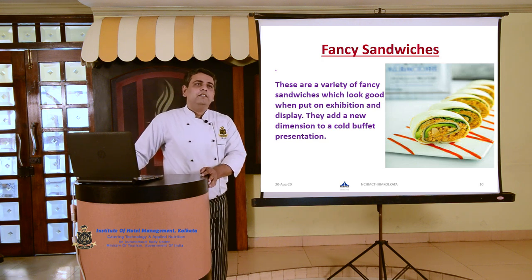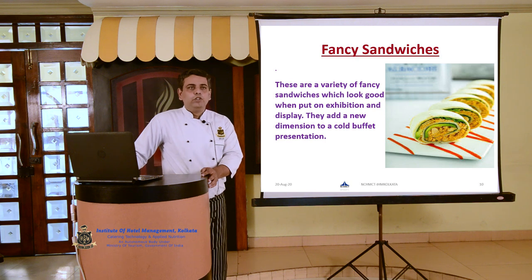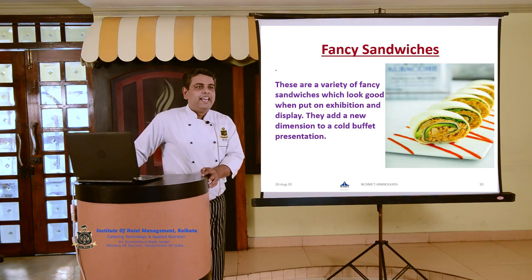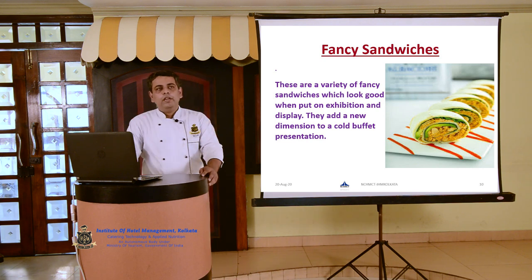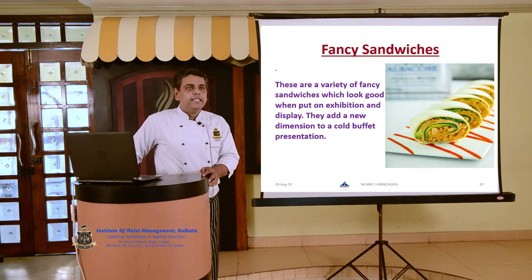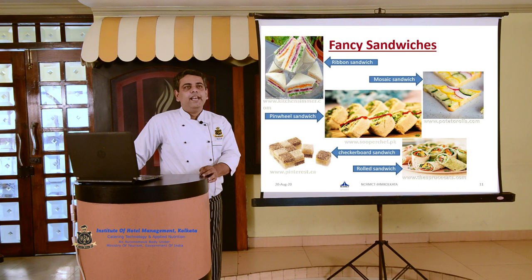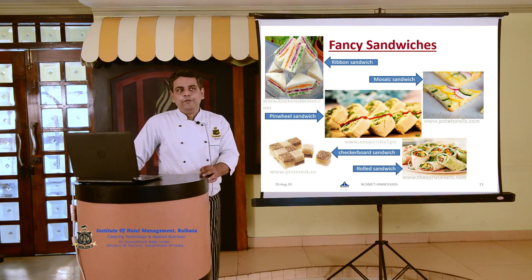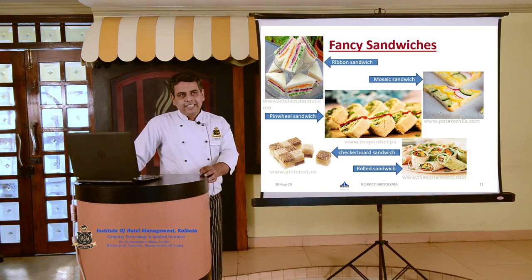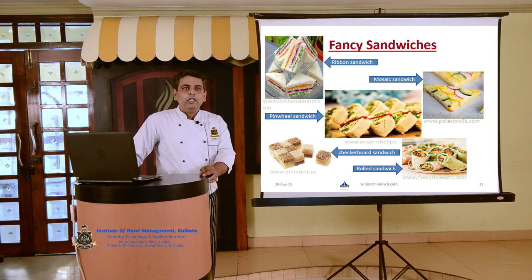In the cold sandwich category, the next one is fancy sandwiches. These are varieties which look good when put on exhibition and display, and they add a new dimension to the cold buffet. The popular types are ribbon sandwich, mosaic sandwich, pinwheel sandwich, checkerboard sandwich, and rolled sandwich. The ribbon sandwich is made by layering white or brown slices of bread with colorful filling until a square block is obtained. The block is kept in the fridge and chilled down, then cut into 1-centimeter thick slices so that it will be very neat and tidy.